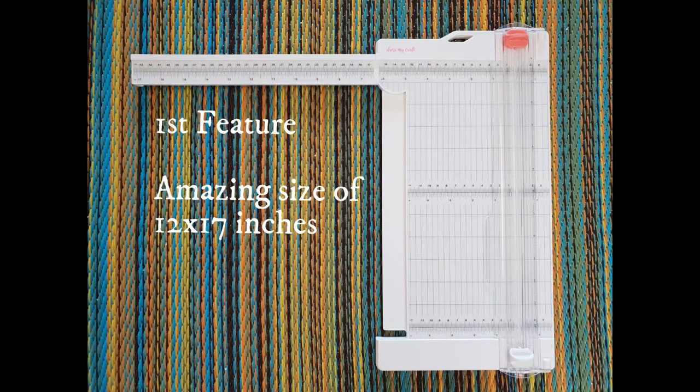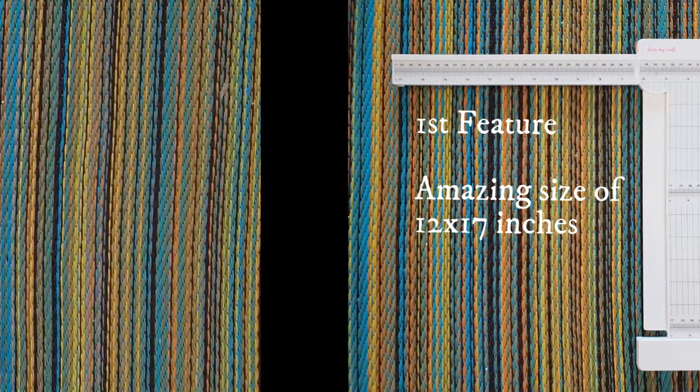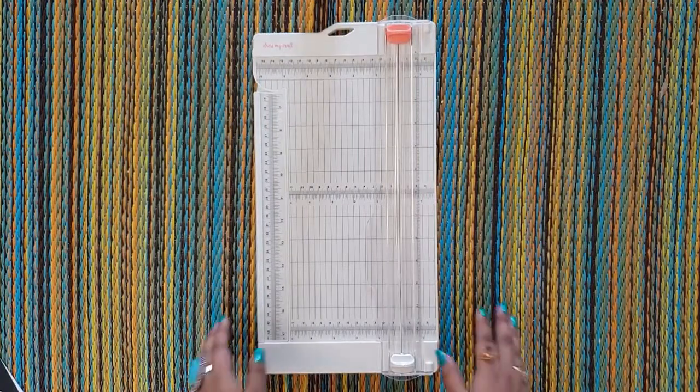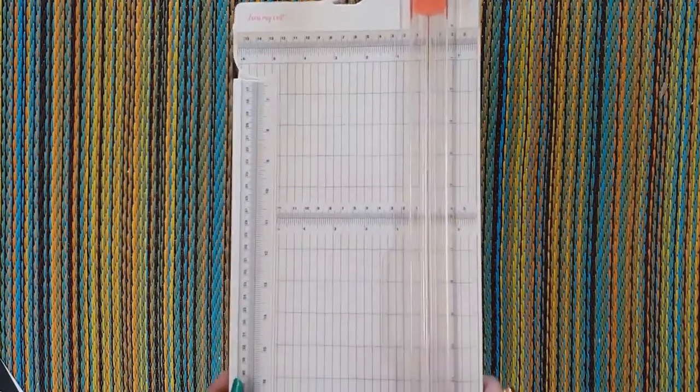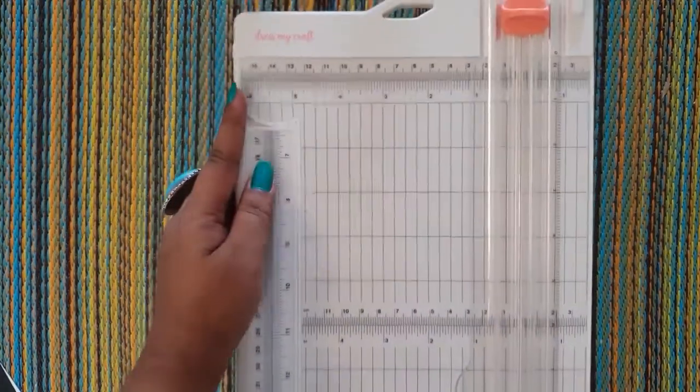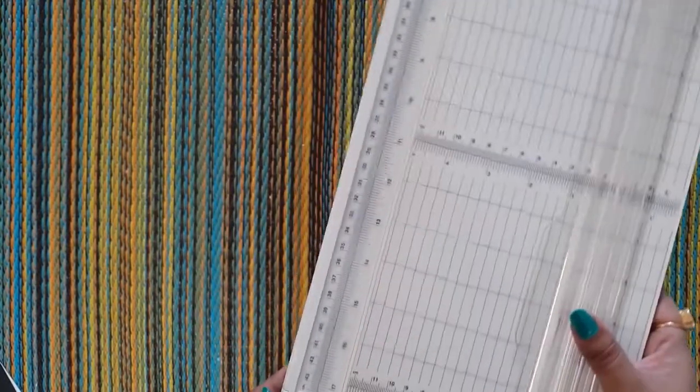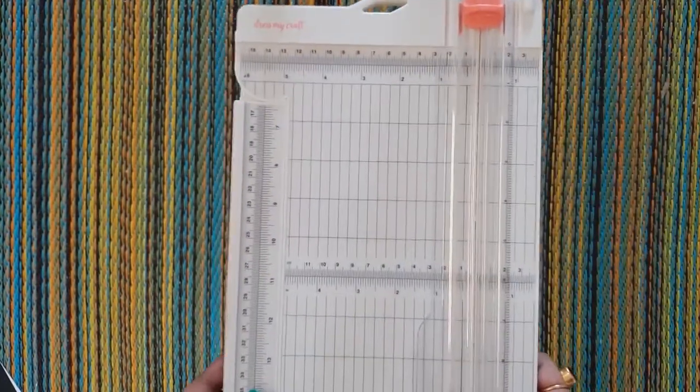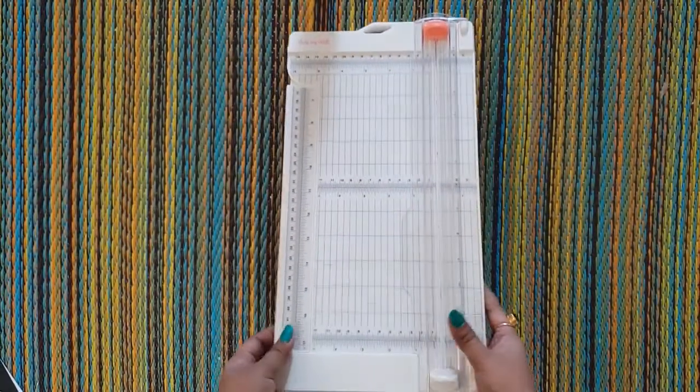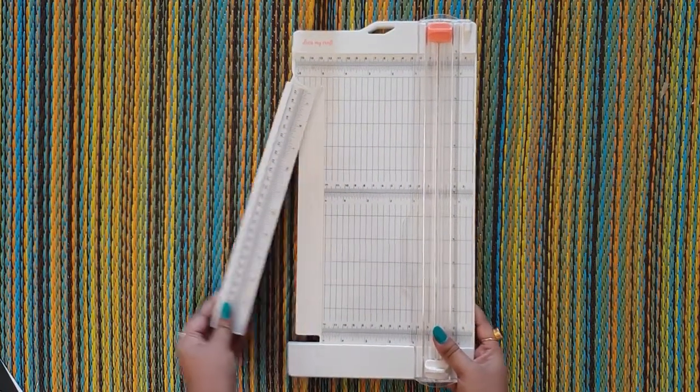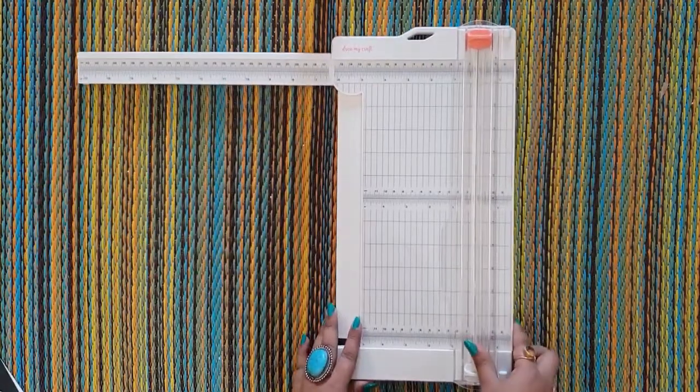This is an innovative trimmer with an amazing size of 12 x 17 inches. So while it is closed you can see that it is 6 x 12 inches in size, and when you open it, it extends up to 17 inches. You can place your paper and make cuts up to 17 inches very easily.